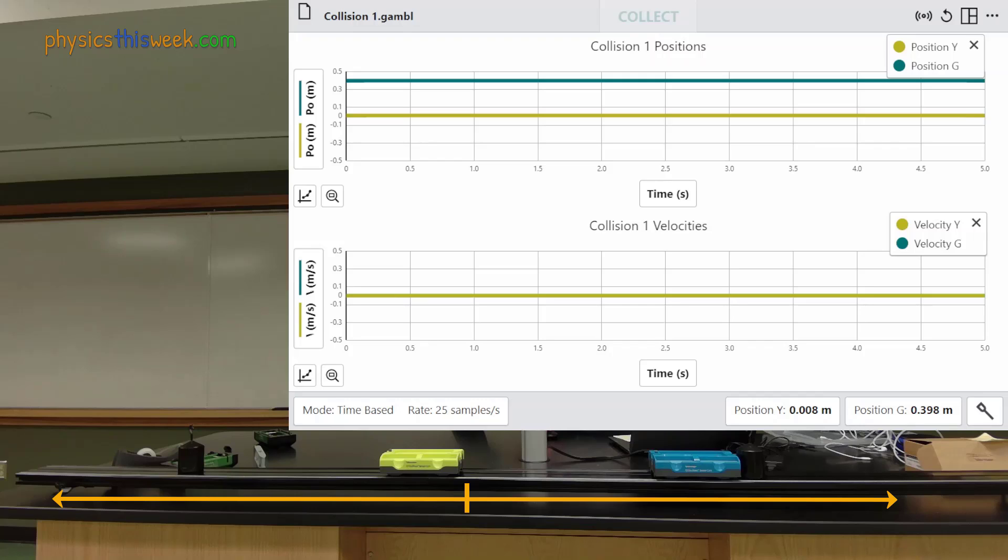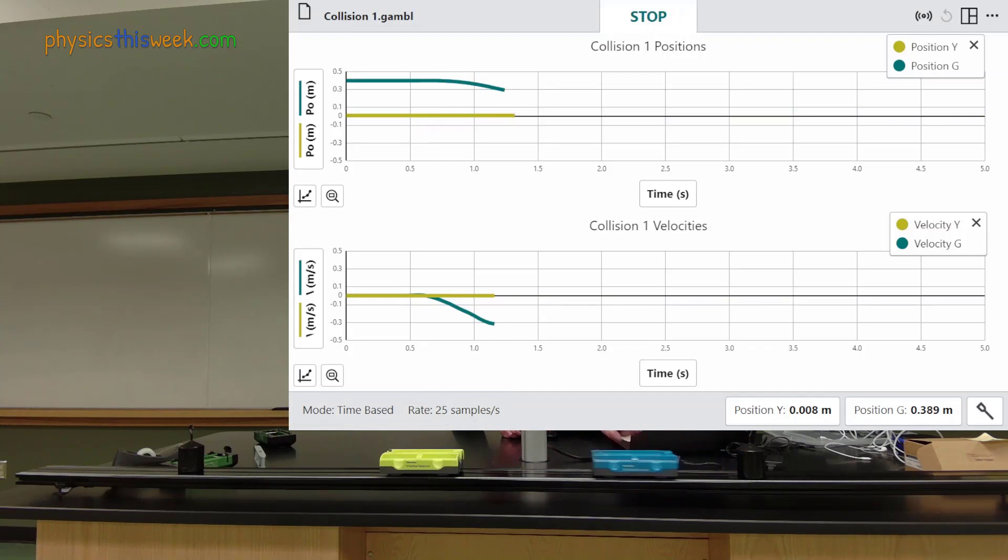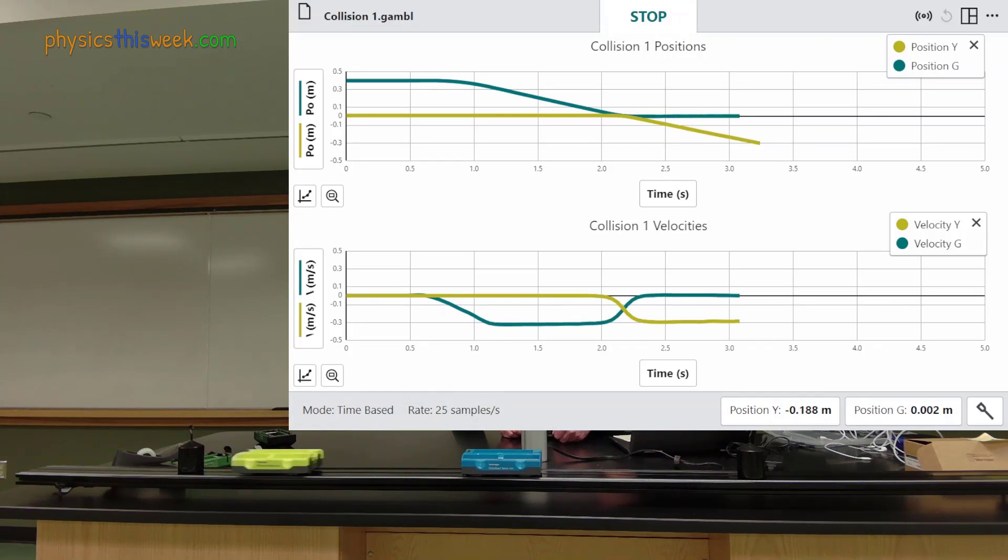The calibration is set up so that the positive direction is to the right. The center of the track is positioned x equals 0 meters. The software window starts out with the information from the initial positions of the carts. When I start the data collection this data momentarily disappears and then is replaced by the data from the collision.